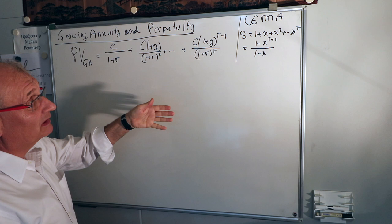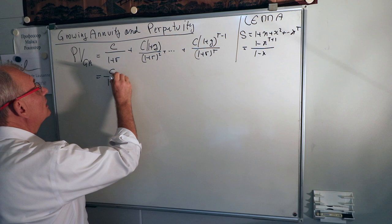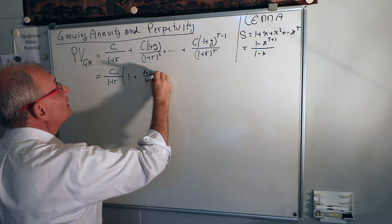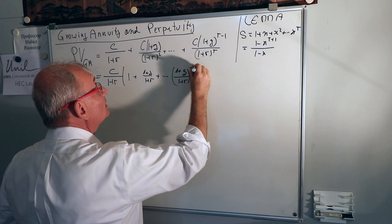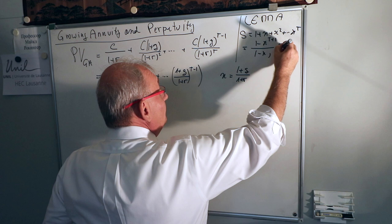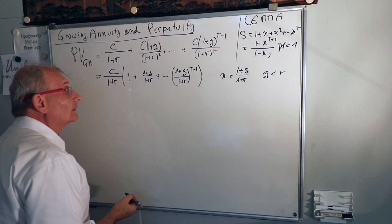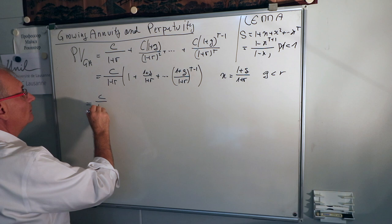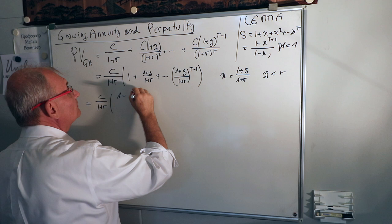We factor out c divided by (1+r), and recognize the sum 1 plus (1+g)/(1+r) plus ... plus ((1+g)/(1+r))^(t-1). We recognize the lemma formula where x equals (1+g)/(1+r). To have x in absolute value smaller than 1, we need to assume g is smaller than r. Then we apply the lemma: it's c divided by (1+r) times (1 minus ((1+g)/(1+r))^t) divided by (1 minus (1+g)/(1+r)).